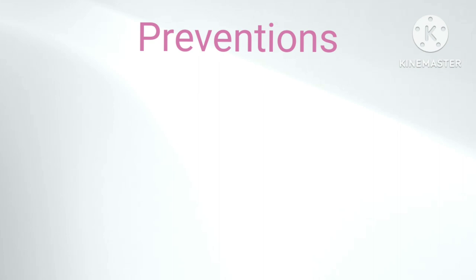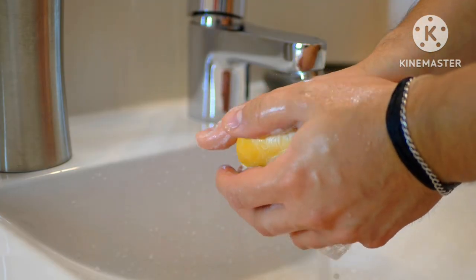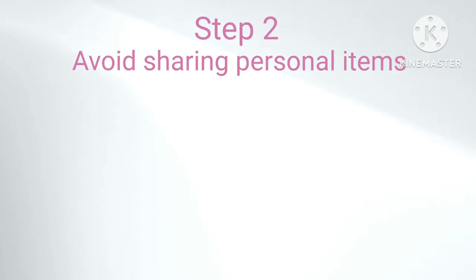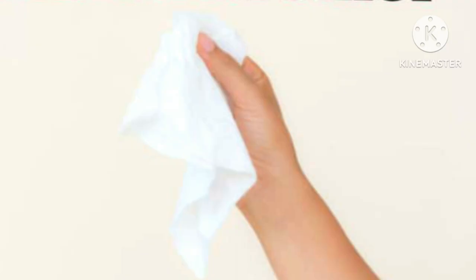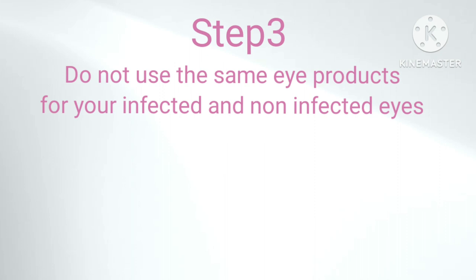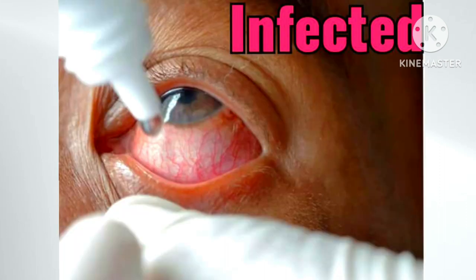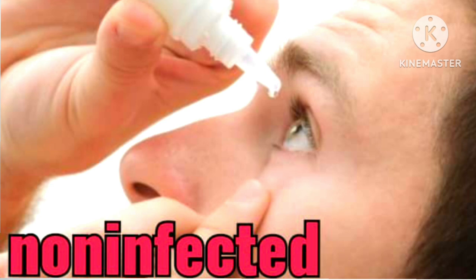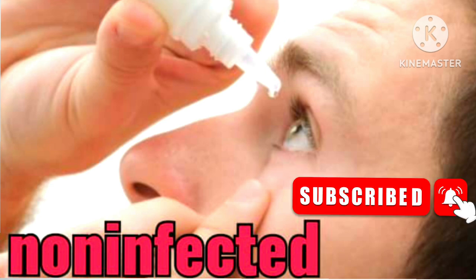Prevention is by personal hygiene. The following steps should be followed to prevent bacterial infection: First, wash your hands often with soap and water. Avoid sharing personal items like glasses, handkerchiefs, or towels. Do not use the same eye products for your infected and non-infected eye, as you can spread the infection from the infected to the non-infected eye while using the same eye products.